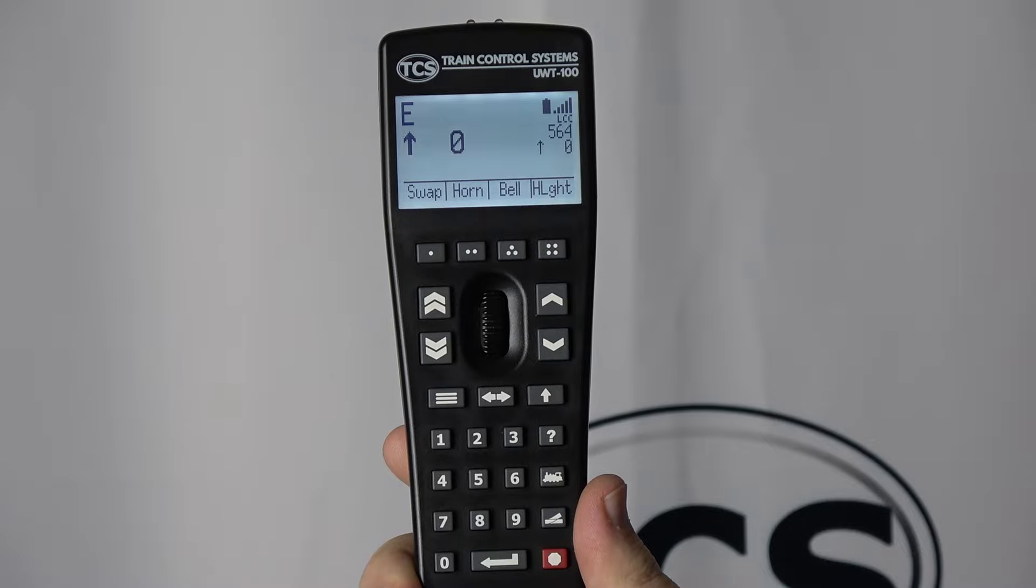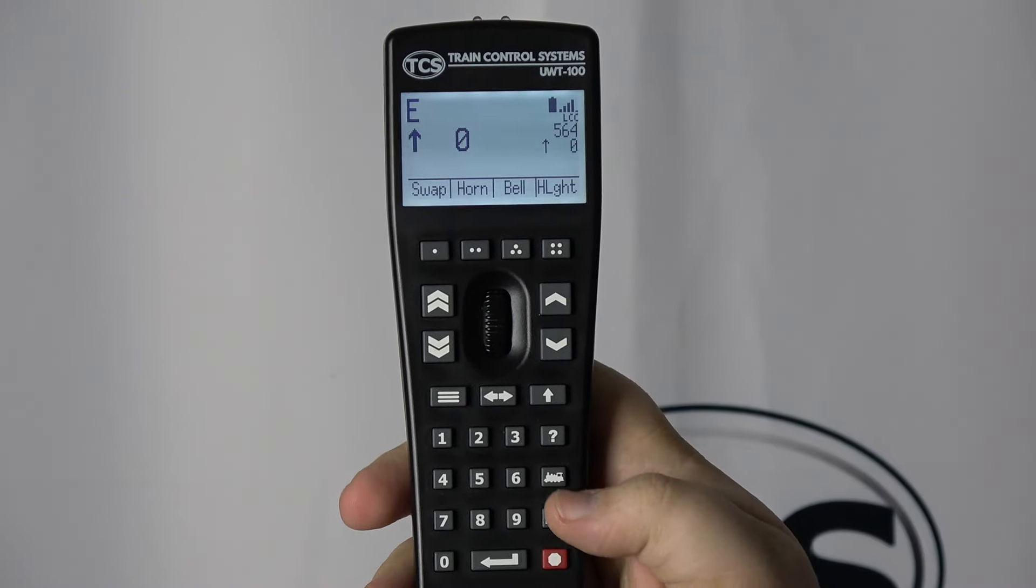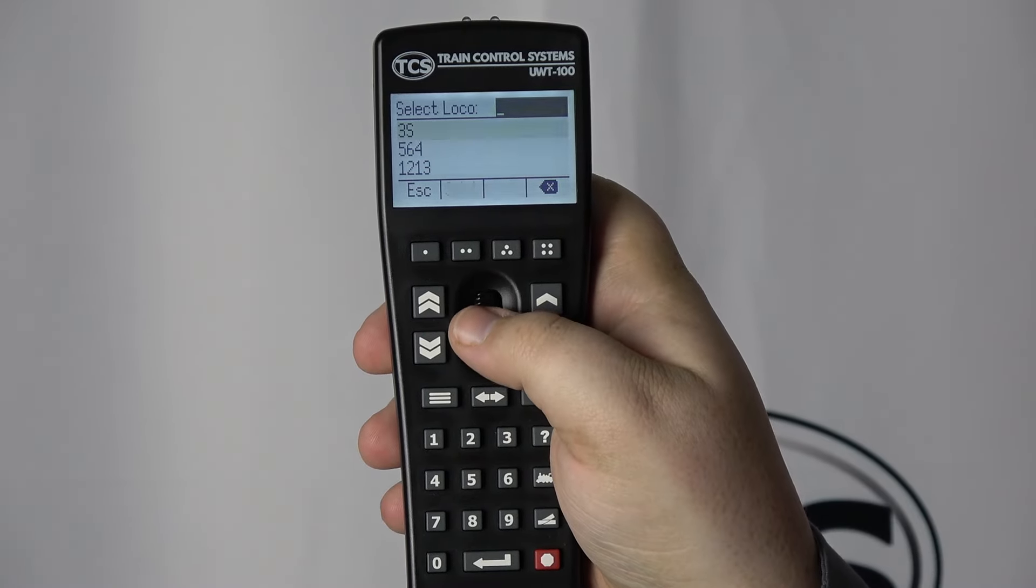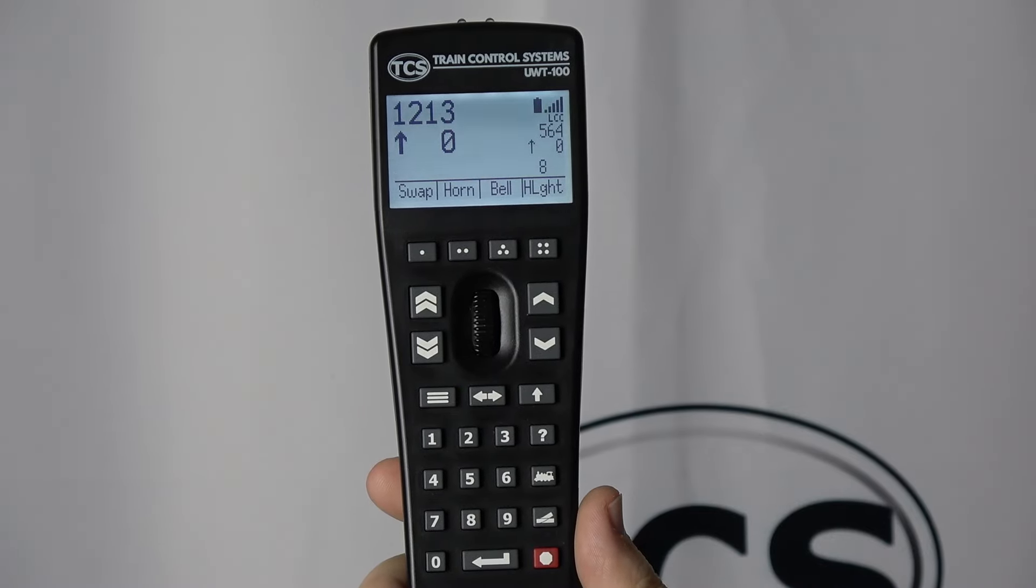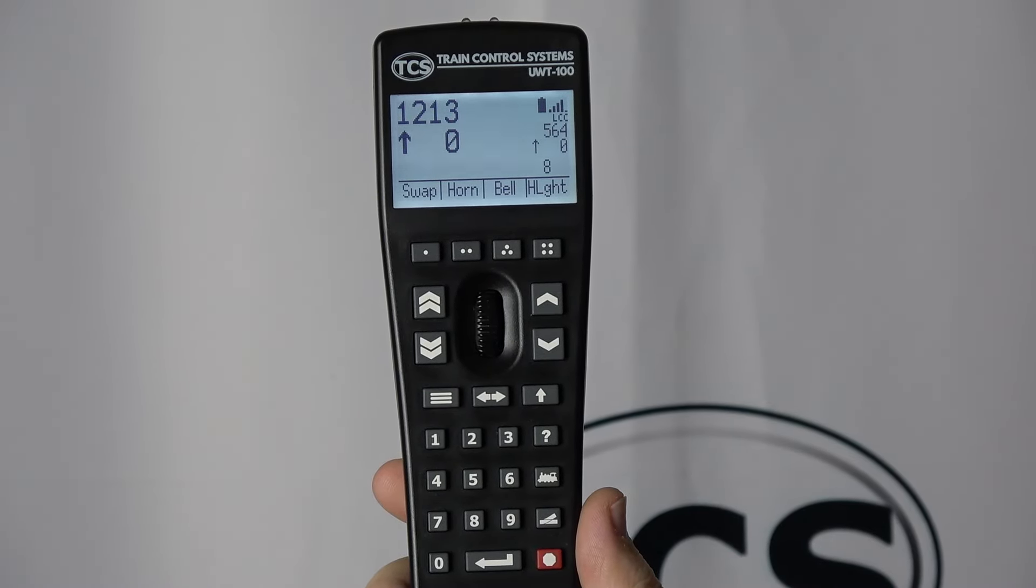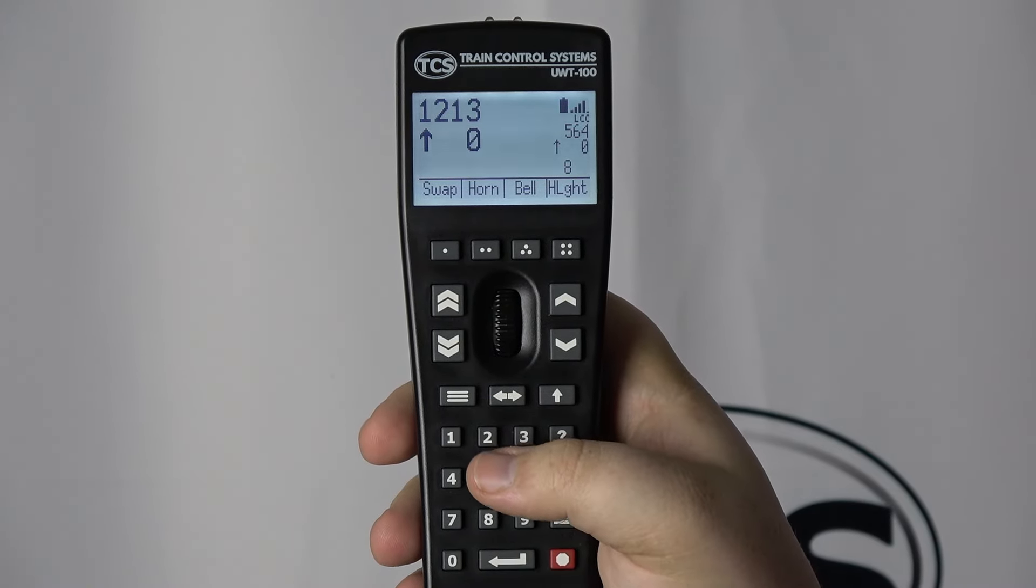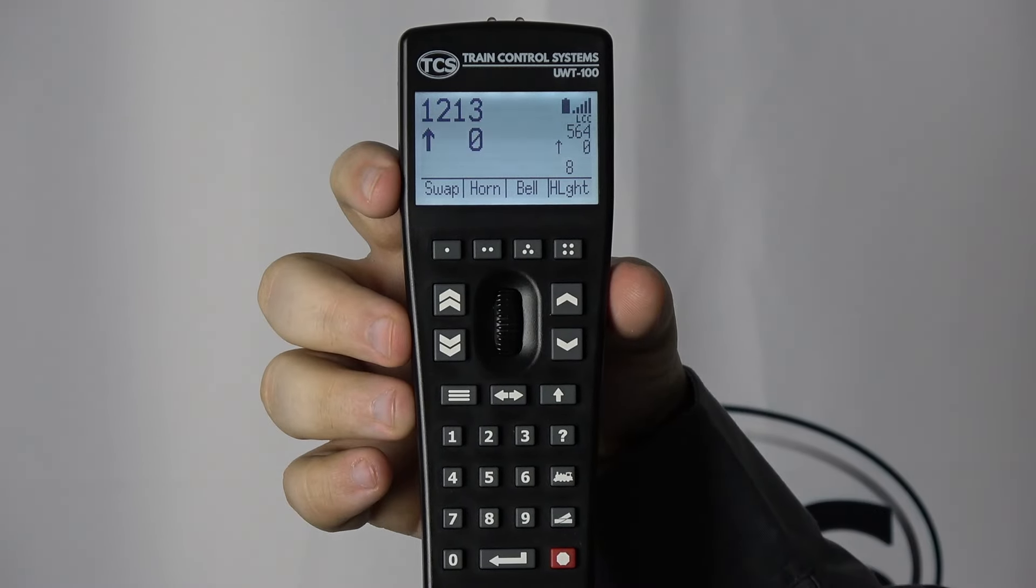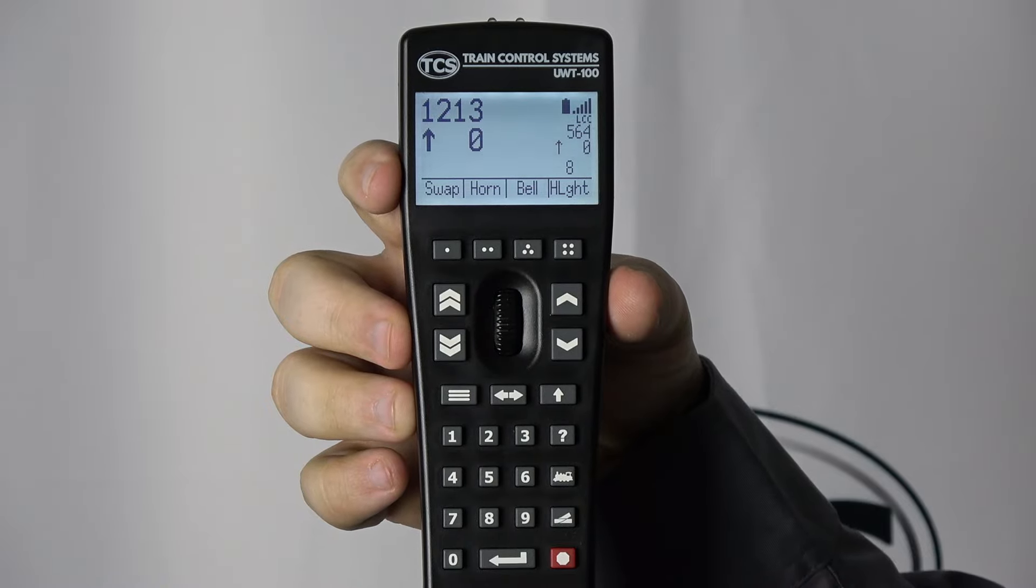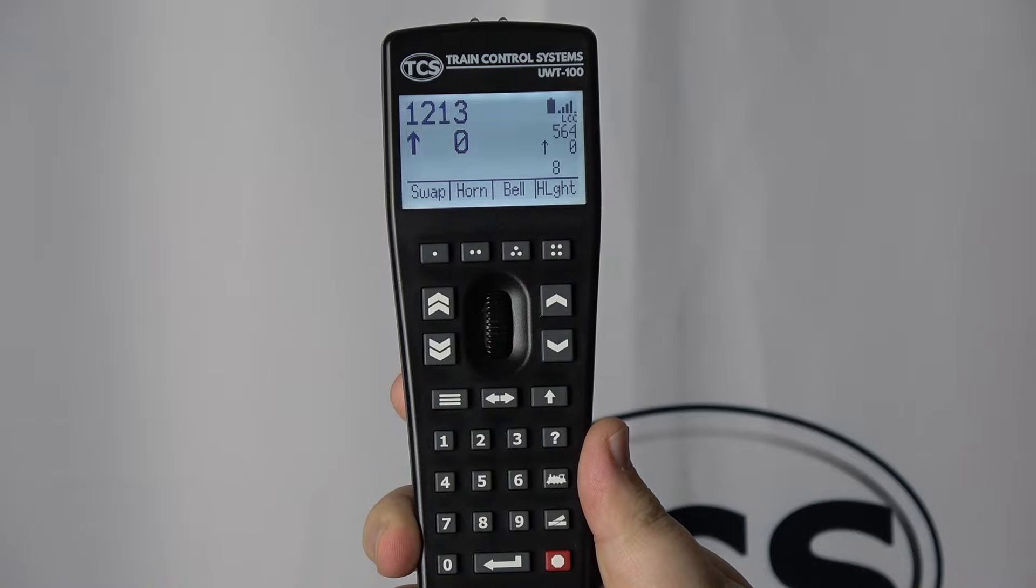Use the select local button to add a new train to the primary slot. In this case, we will be using 1213. If you direct your attention to the bottom left side of the screen, you will see the word recall has changed to swap. This is so you can easily switch between primary and secondary trains.